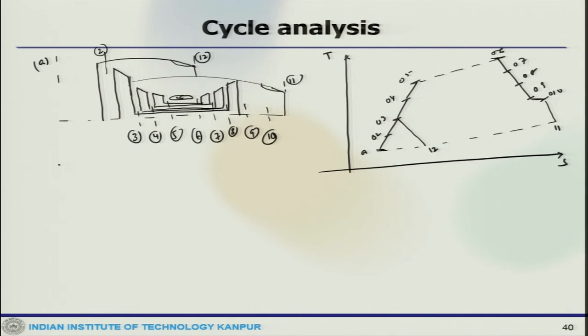Now if we do the analysis, first the energy balance of the first spool, the fan spool: (1+beta)*m_dot_a*Cp_c*(T03-T02) = eta_m1*lambda_1*m_dot_a*(1+F-B)*Cp_h*(T09-T010).